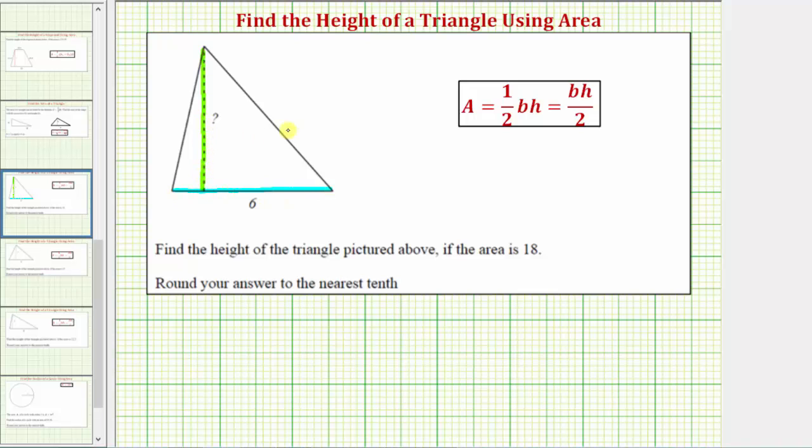Let's go ahead and label this side B for base, and this length H for height. And because we know the area of the triangle, we can use the area formula to set up an equation and solve for H.